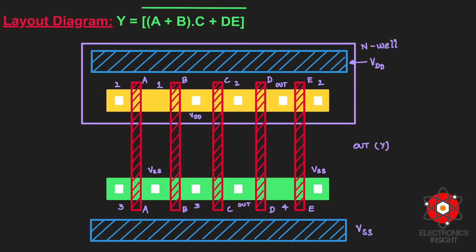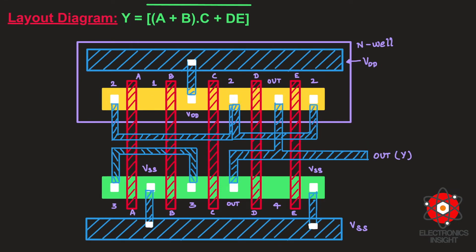The connections are also going to look similar to a stick diagram. The key thing to understand from the layout diagram is the estimation of total layout area. Once VDD, VSS, polysilicon, p-diffusion, and n-diffusion layers are fixed along with the n-well region, we connect the common interconnection nodes — just as we did in the stick diagram using thick metal lines, but here using rectangles. VDD and VSS connections are given, and all output connections are made, completing the layout diagram.